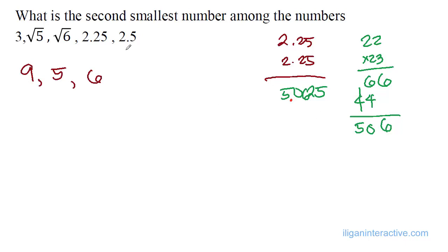And then 2.5, if you square 2.5, 2.5 times 2.5, it ends with 5. So I'll just write 25, and then I have 2 times 3. I'll just simply add 1 to this and multiply it to the original. 2 times 3 is 6, so 625, then move the decimal places 2 steps, so 6.25.